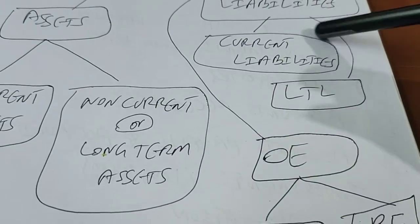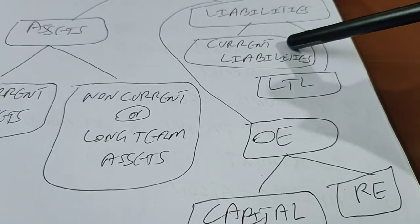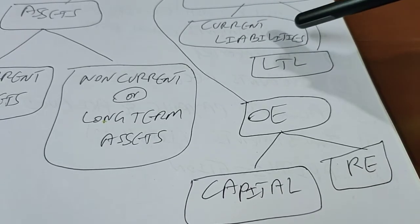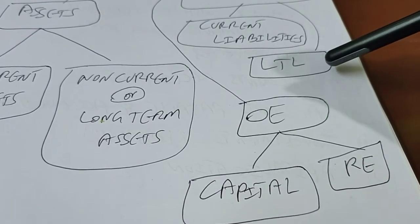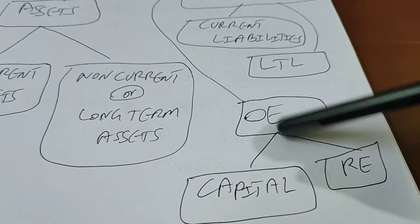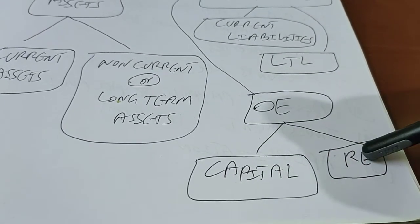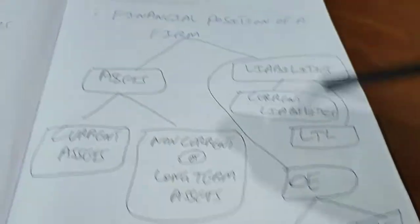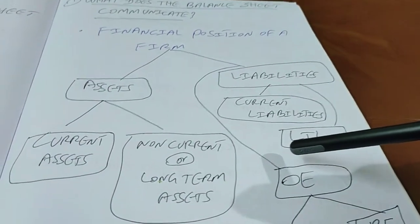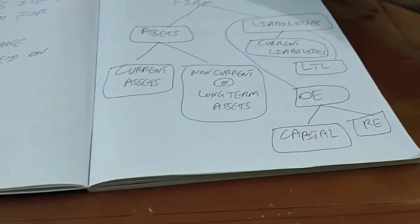We also want to know the liabilities of the firm, which can be decomposed into current liabilities and long-term liabilities — how much liability the firm has in short term as well as long term, and whether there are any problems in settling those liabilities. The last component is the decomposition of owner's equity, which consists of capital and retained earnings. We make use of all these items reported in the balance sheet to make inferences about the financial health of the organization.